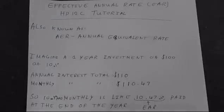We call this 10.47% your effective annual rate. This takes into account the effects of compounding when you're paying more frequently than one year.